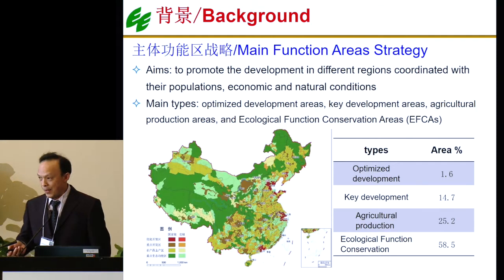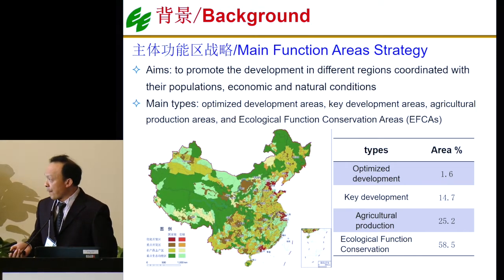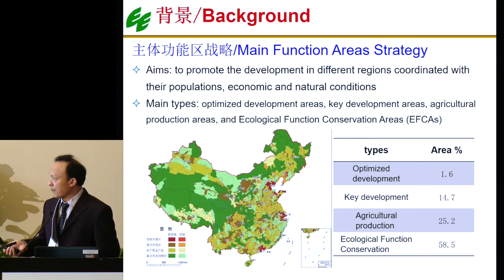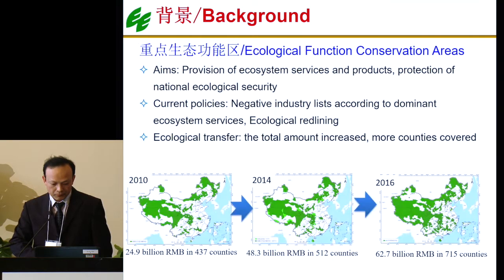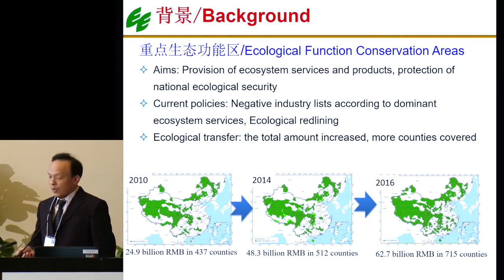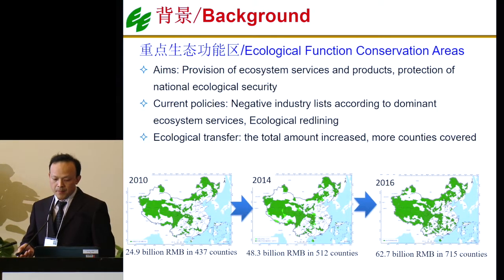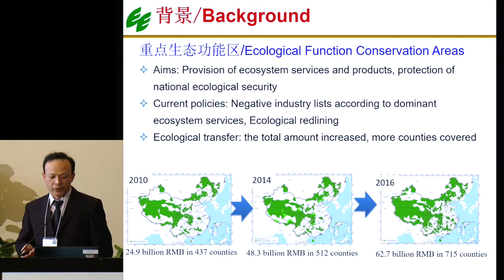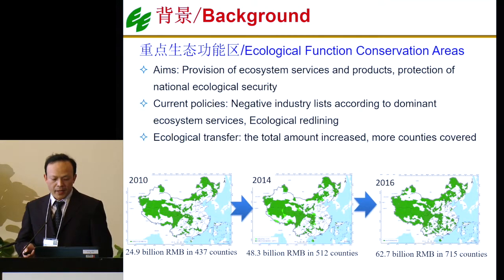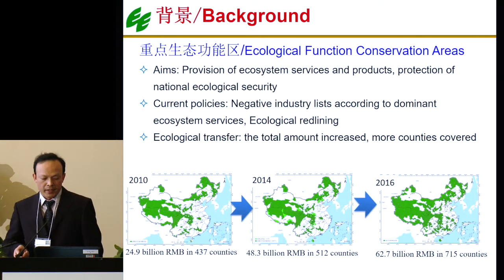And also we have the ecological function conservation area — we call it the efficacy area. The efficacy area contains about 85% of the entire land in China. As I mentioned, the ecological function conservation area is the major area related to ecological protection.